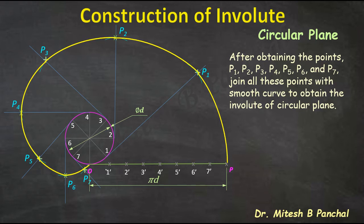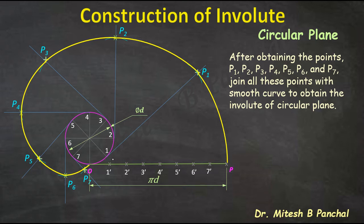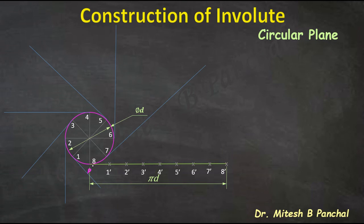Now consider that the string is already wound and we are opening the string — this is the reverse, called the unwinding of the string. For the initial position, point P is at point O. As unwinding proceeds, P comes to P1, P2, P3, P4, P5, P6. For winding, we considered points on the circumference in anticlockwise direction. For unwinding, we consider the points 1, 2, 3, 4, 5, 6, 7, 8 in clockwise direction. Point P is considered on the circumference, since the string is already wound and we are now opening it.